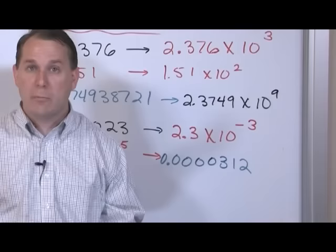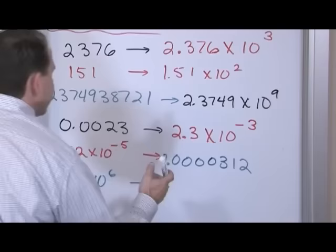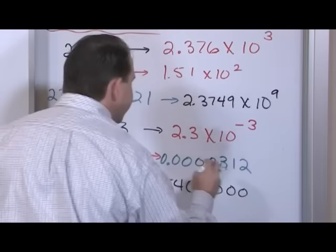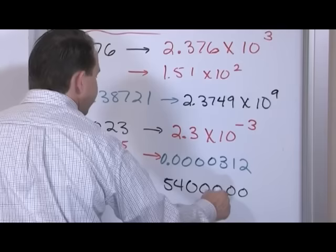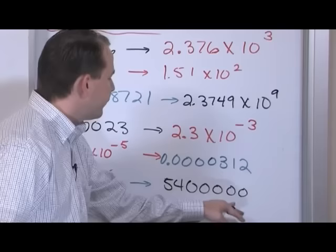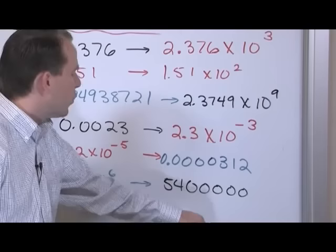To convert 5.4 times 10 to the 6 back to a regular number: write 5, 4, put the decimal after the 5, and shift it six places to the right — adding zeros as needed — to get 5,400,000. The key rule: positive exponent means shift the decimal right, making a large number; negative exponent means shift left, making a small number. You can stick your finger at the decimal and count the spots to check yourself.